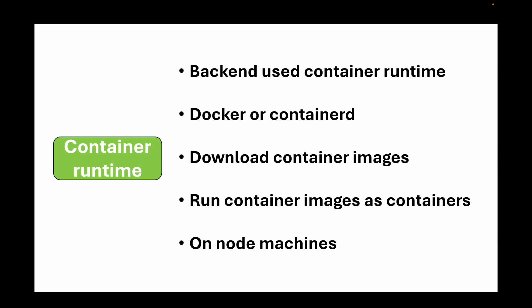To summarize the worker node components: we have the kubelet, which acts as an agent and executes all instructions from the API server on the worker node; the kube-proxy, the networking component that handles communication between pods and ensures traffic is routed to the correct pod; and the container runtime — such as Docker or containerd — used in the backend to download images and run containers.